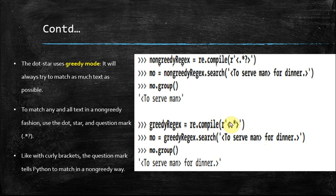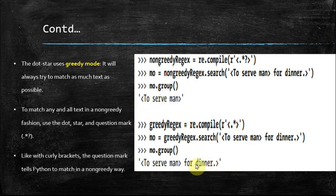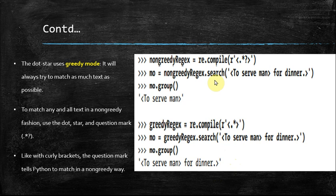In greedy mode, it tries to match the largest possible string. Even though there is a closing angular bracket earlier in the string, the greedy version continues to the last closing angular bracket, so the entire string is matched and displayed.